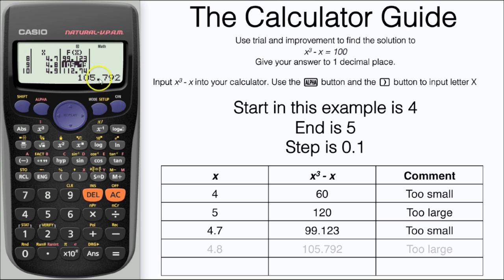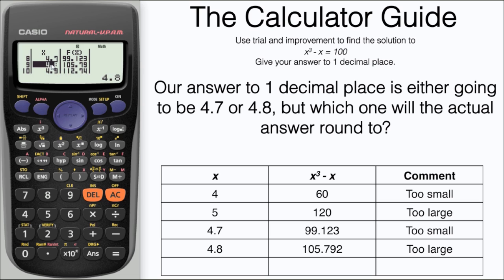You can scroll right to the f of X column to get a fuller calculator display. Now our answer, because we just want one decimal place, is either going to be 4.7 or 4.8, so the question is which one of these answers will our actual value round to.